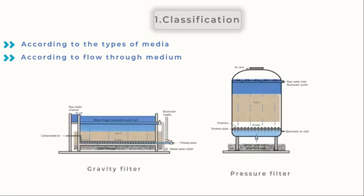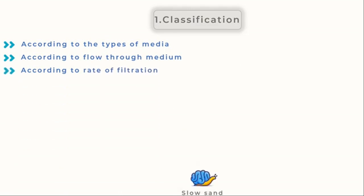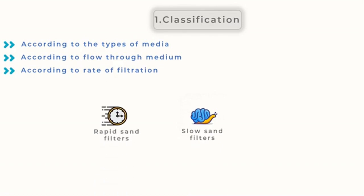Gravity filters are open to the atmosphere, and gravity creates the flow through the medium. In a pressure filter, the pressure vessel houses the filter medium. The vessel receives water under pressure and can be either a cylindrical tank with a horizontal or vertical axis. The rate of filtering can also be used to classify filters. Flow rates for slow sand filters are typically around 0.1 meters per hour, but can go as high as 0.4 meters per hour, while a rapid sand filter can produce a flow of 4 to 21 meters per hour.